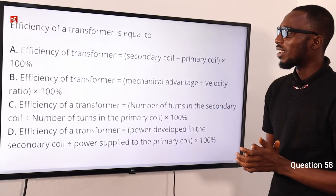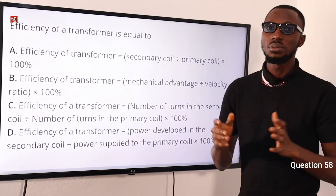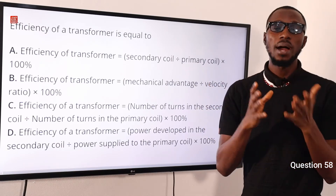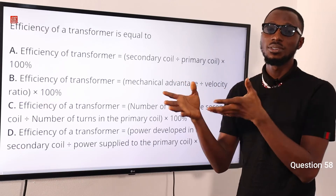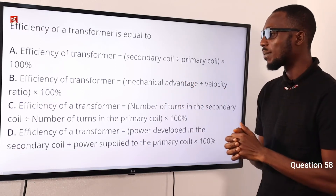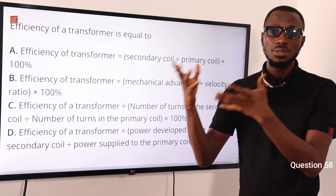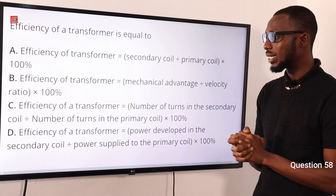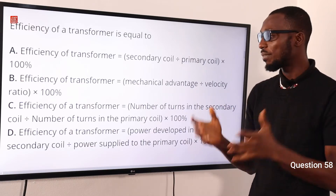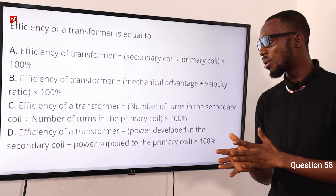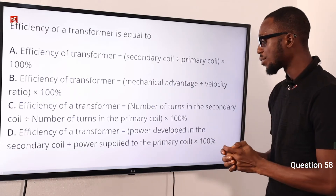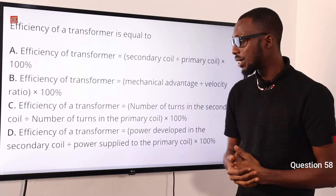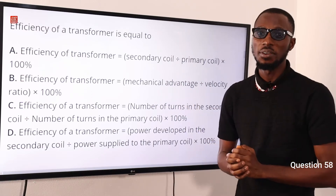Question 58: Efficiency of a transformer equals what? It should be power in the secondary over power in the primary coil — that is, output power over input power. Option D is correct: efficiency of a transformer equals power developed in the secondary coil divided by power supplied to the primary coil, times 100%. So option D is very correct.